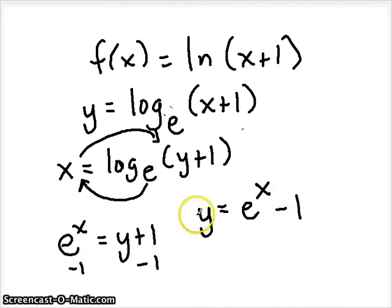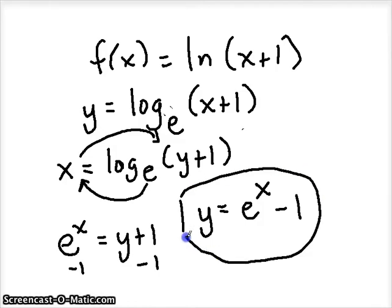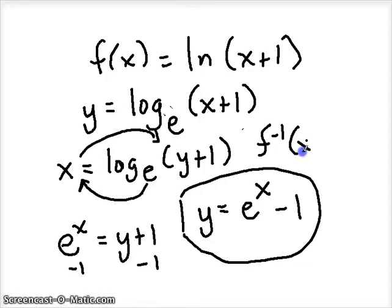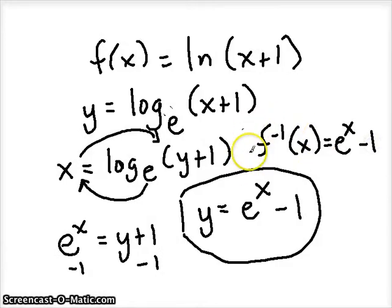So there's the inverse, e to the x minus 1. You could also write, instead of y, you could use your inverse function name, if you remember what that is. So you could also write it as the inverse of f(x) is equal to e to the x minus 1. Which would probably be a better way of writing it. But it's up to you, or your teacher, or whatever you're doing.